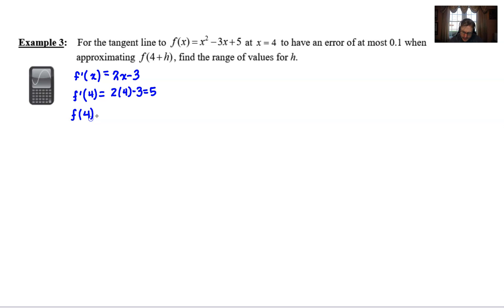And as always, we will find the y value or the f value on our curve by plugging 4 in for x. So we end up with 16 - 12 + 5, which I believe would be 9. So we have all of the makings for our tangent line.